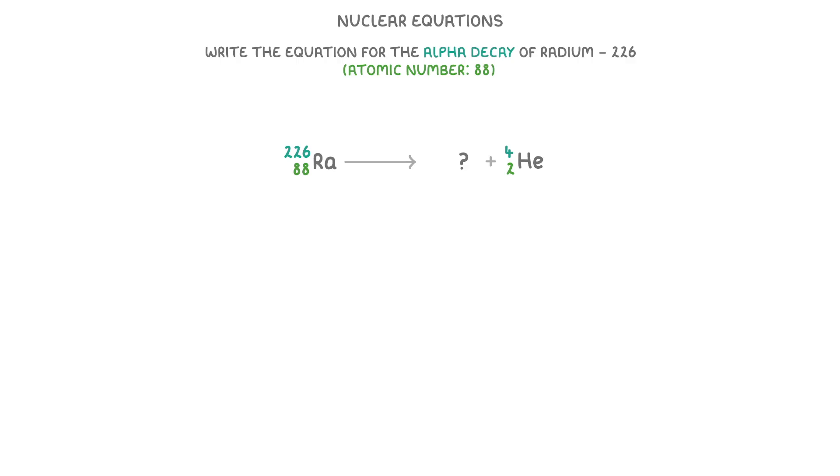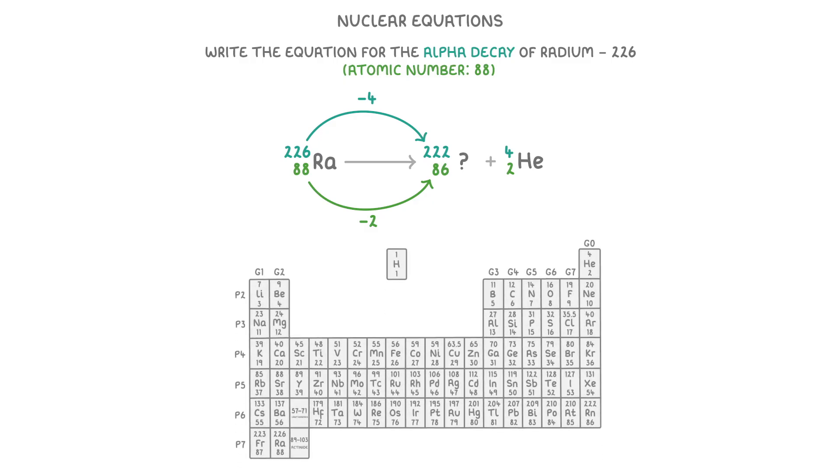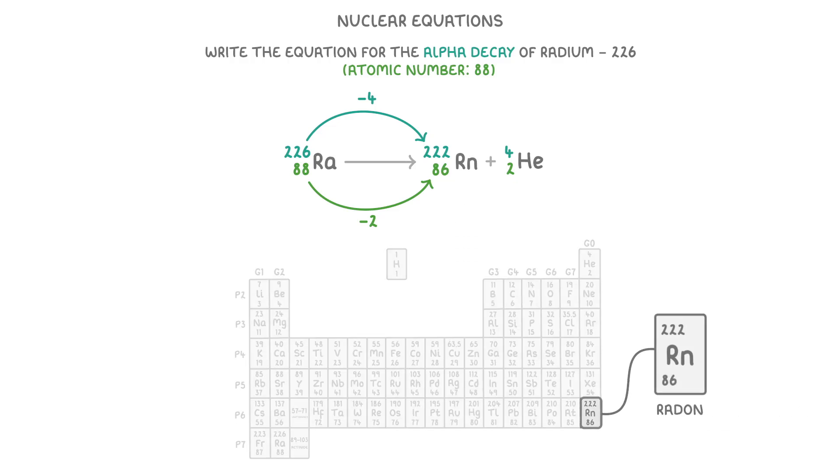Then to figure out what our decay product is, we subtract 4 from the 226 to get a mass number of 222, and minus 2 from the 88 to get an atomic number of 86. Then all we have to do is check the periodic table to figure out what element it is. So in this case, radon.